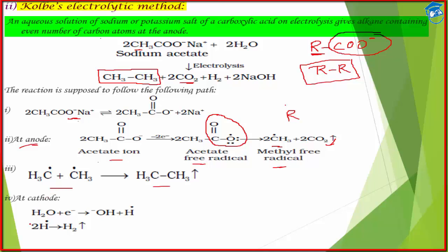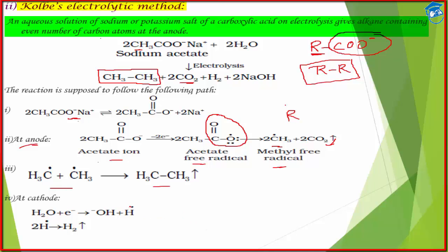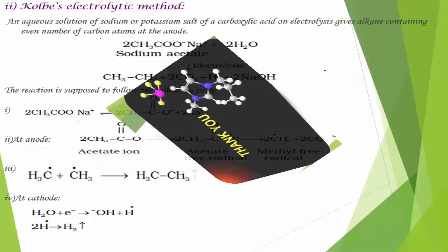Something also happens at the cathode — reduction takes place. H2O converts to OH⁻ and an H radical, and the H radicals dimerize to form H2. In H2O the oxidation state of hydrogen is +1, so it gets reduced to H2 — oxidation state goes from +1 to 0, which is reduction. So at the anode oxidation occurs and at the cathode reduction occurs, and the overall process gives us an alkane via dimerization of the alkyl group.